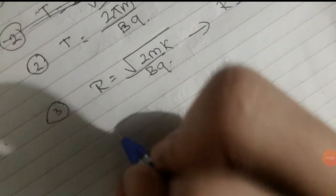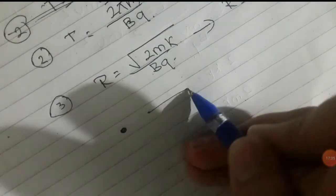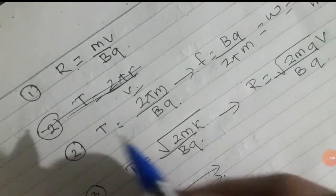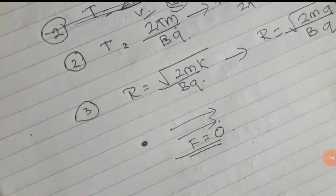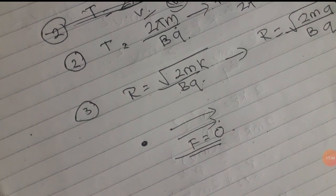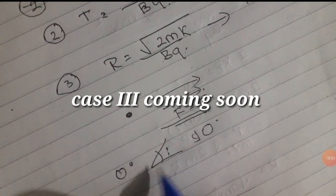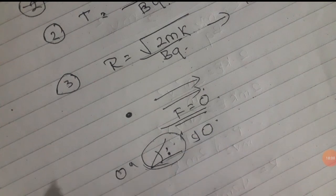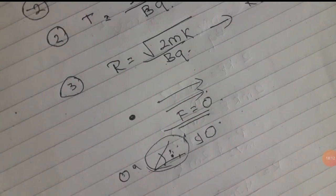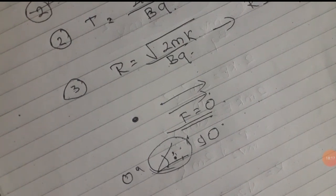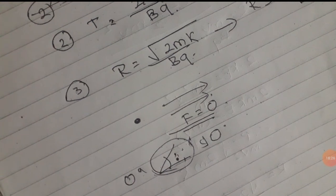When the magnetic field is parallel, there is no force. The time period is independent of velocity. For Case 3, when the velocity is at some angle — not 0 degrees and not 90 degrees — this is the third case covered in the next video. Moving charges in a magnetic field can be divided into all these types. Please subscribe and press the notification bell for support.